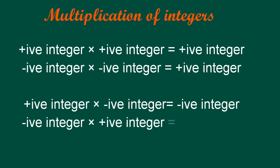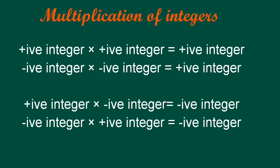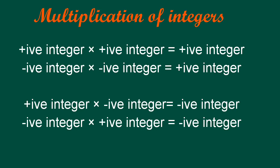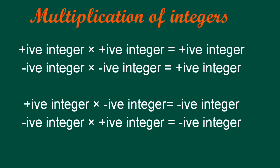On multiplying integers having the same sign it will be positive, whereas multiplying integers having opposite signs it will be negative.